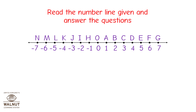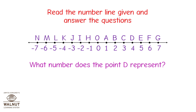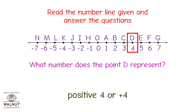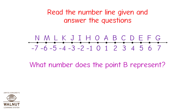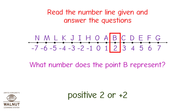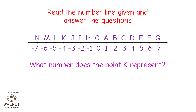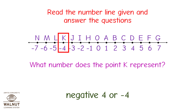Read the number line given and answer the questions. Look at the point D on the number line. It is exactly above the number 4. So point D represents positive 4. What number does the point B represent? Look at the point B on the number line. It is exactly above the number 2. So point B represents positive 2. What number does the point K represent? Look at the point K on the number line. It is exactly above the number minus 4. So point K represents negative 4.